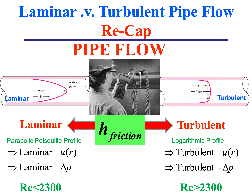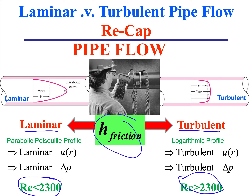In summary, for turbulent flow the maximum velocity is only 10-20% larger than the average velocity — a plug-like profile — whereas in laminar flow the maximum velocity is double the average. The friction head loss in a pipe depends on whether the flow is laminar or turbulent, defined by Reynolds number below or above 2300. The pressure drop for turbulent flow scales as V^1.75, much more expensive energetically than the linear V scaling of laminar flow.